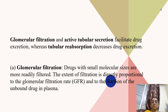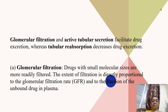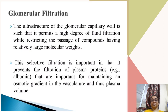Glomerular filtration: drugs with smaller molecular size are more readily filtered. The extent of filtration is directly proportional to the glomerular filtration rate and to the fraction of unbound drug in the plasma, so free drug is readily filtered from the glomerulus. Smaller size and free drugs are filtered from the glomeruli.